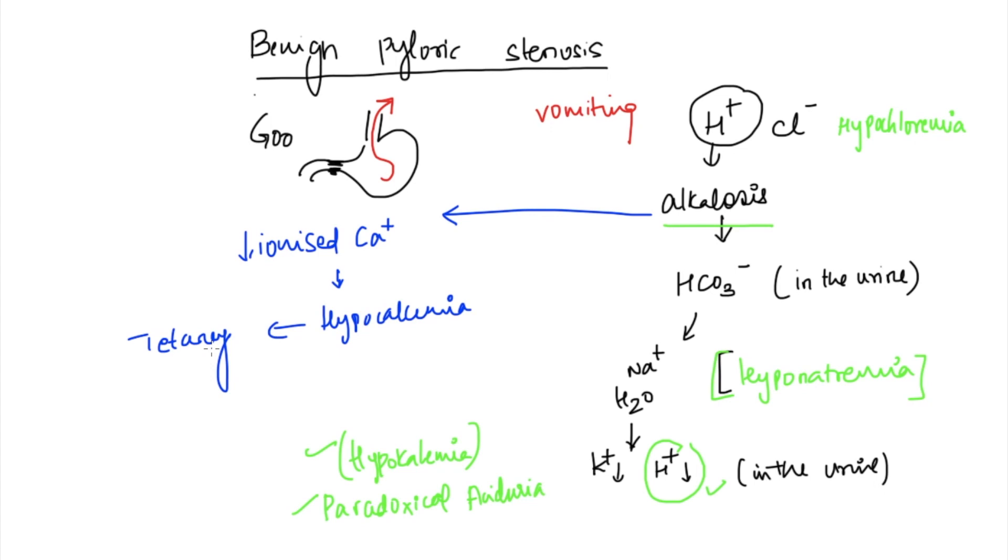These are the set of events that occur in pyloric stenosis. Let's number them from the beginning. First, you're going to have hypochloremia. You're in a state of alkalosis, so you want to throw away the bicarbonate. You increase bicarbonate excretion in the urine. Along with bicarbonate goes your sodium, so you'll have transient hyponatremia.